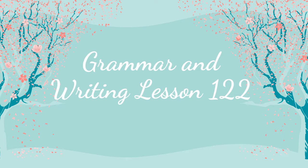Hello, everyone. Welcome to Grammar and Writing, Lesson 122. So we've been talking about nouns as complements. We talked about the predicate nominatives in our last lesson. Now we're going to talk about them as direct objects.